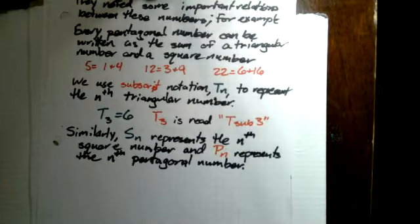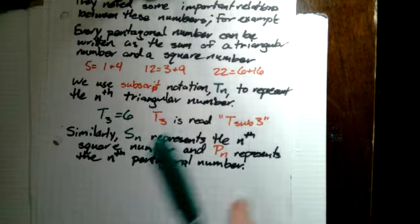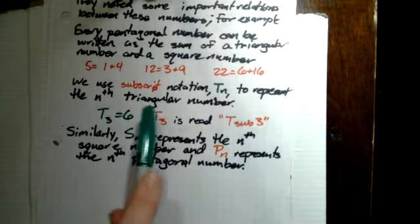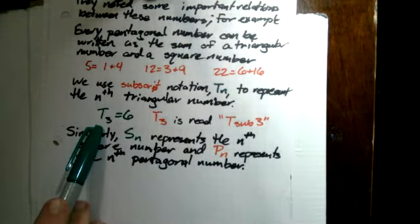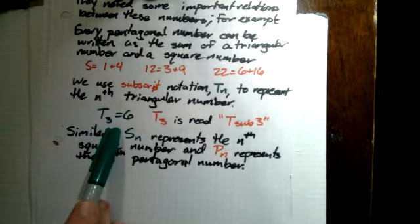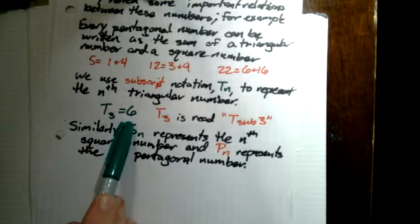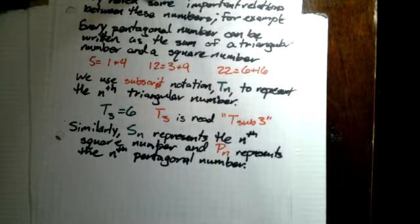Pythagoras and the Brotherhood noted some important relationships between these numbers. For example, every pentagonal number can be written as the sum of a triangular number and a square number. 5 is equal to 1 plus 4, 12 is equal to 3 plus 9, 22 is equal to 6 plus 16. We use subscript notation like this to represent the nth triangular number. This is T sub 3 and that's equal to 6. 1 plus 2 plus 3 is 6.